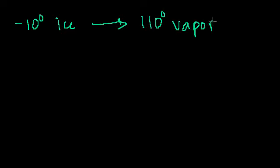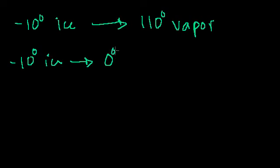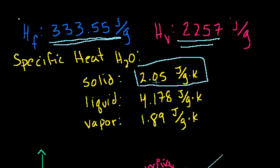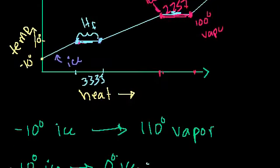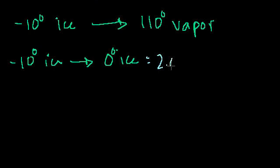Given what we know now, we can figure out how much energy it takes to go from minus 10-degree ice all the way to 110-degree vapor. Let's work this out. The first step is going from minus 10-degree ice to 0-degree ice — a 10-degree change. The specific heat of ice is 2.05 joules per gram Kelvin. So we calculate: 2.05 joules per gram Kelvin times the mass times the temperature change.